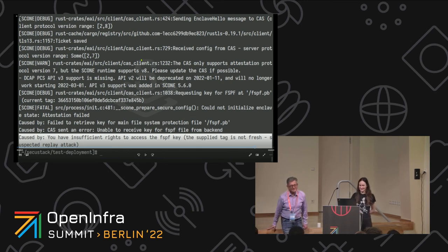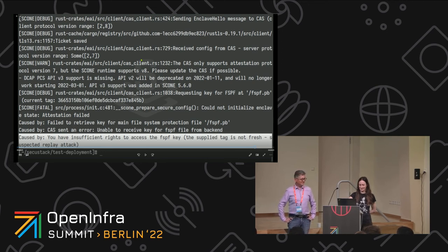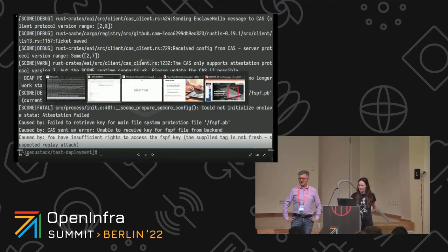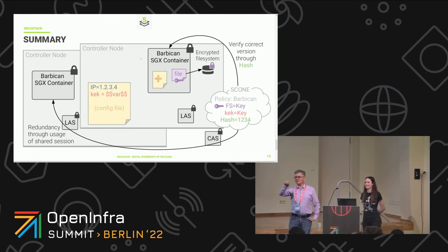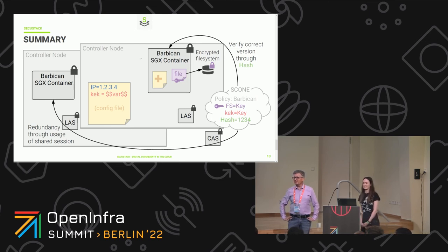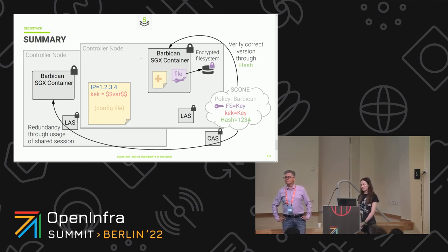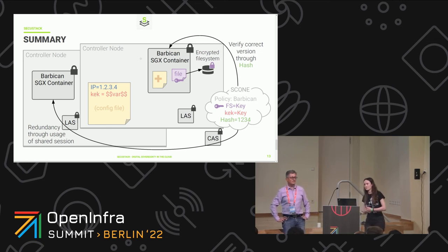That was everything from my side. Thank you very much. Do you have any questions? A question for Josephine — you mentioned that forks were problematic with SGX. So, bearing in mind developing enclave-friendly applications, what's the problem with forks? Are there limits on forks, and what can we do to work around that?